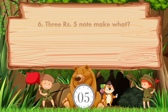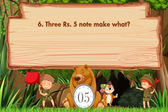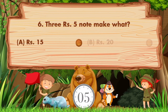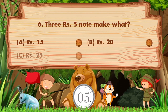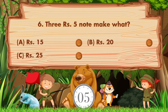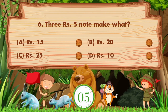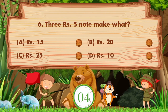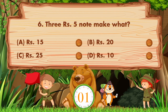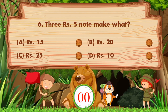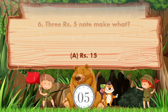Three five-rupee notes make what? Option a is 15 rupees, option b is 20 rupees, option c is 25 rupees, option d is 10 rupees. The answer is option a: 15 rupees.